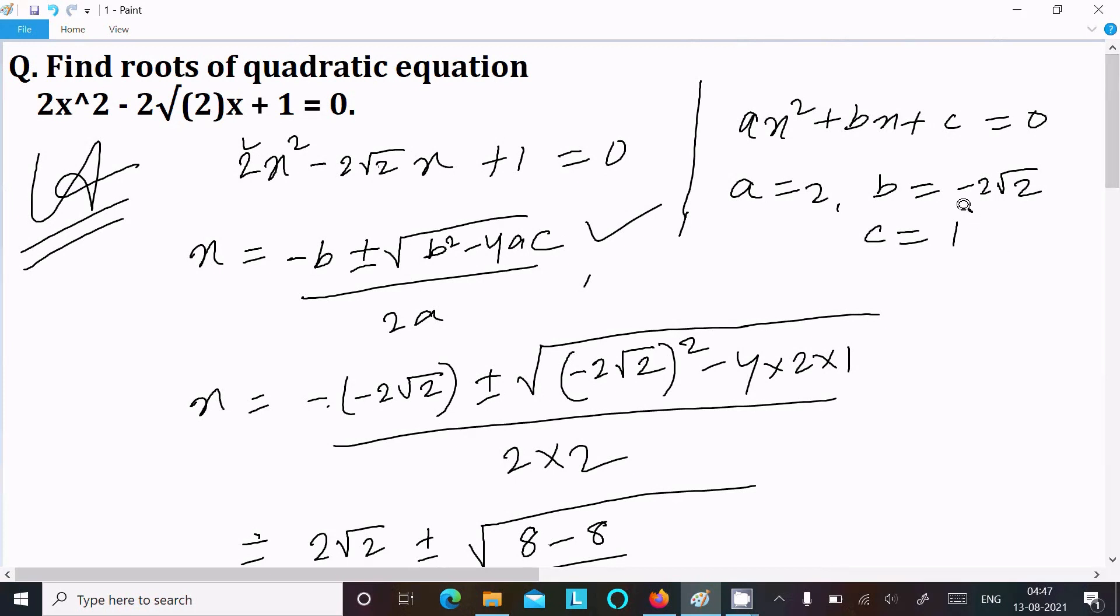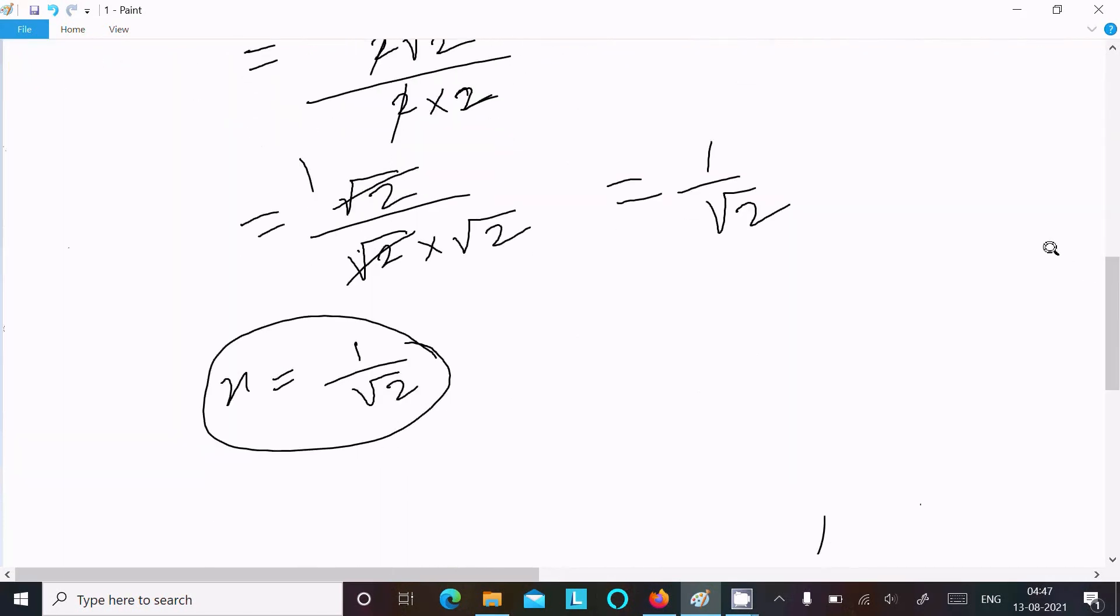So write the equation, identify abc, use the formula, put the value. Now after doing the calculation here you can get x value 1 by √2.